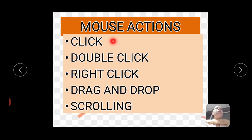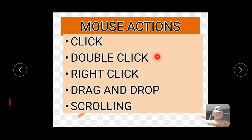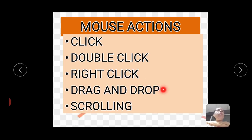Click is used to select an item. Double click is used to open an item — using double click, we can open any icon. Right click — when we right click, a list of different commands appears. Drag and drop — using drag and drop, we can move our icons. And scrolling — using scrolling we can page up and down.